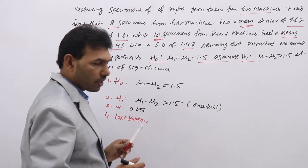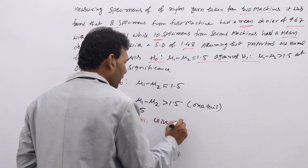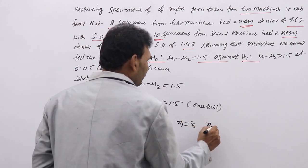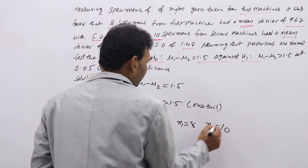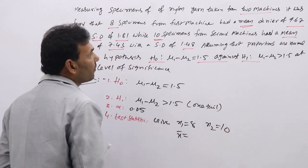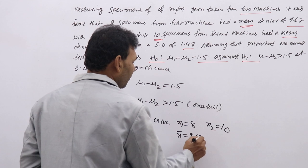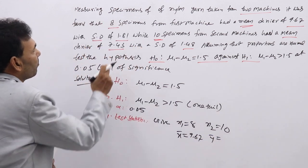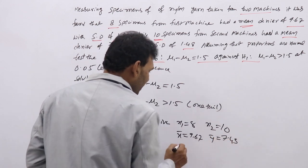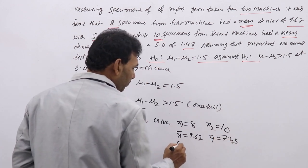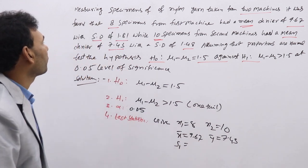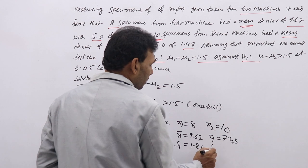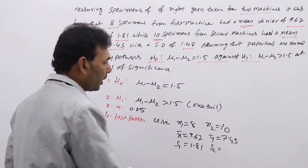H0: mu1 − mu2 = 1.5; H1: mu1 − mu2 > 1.5 (one-tailed test). Alpha = 0.05. Given data: N1 = 8, N2 = 10, X-bar = 9.67, Y-bar = 7.43, s1 = 1.81, s2 = 1.48. Next, calculate the test statistic — first find S.